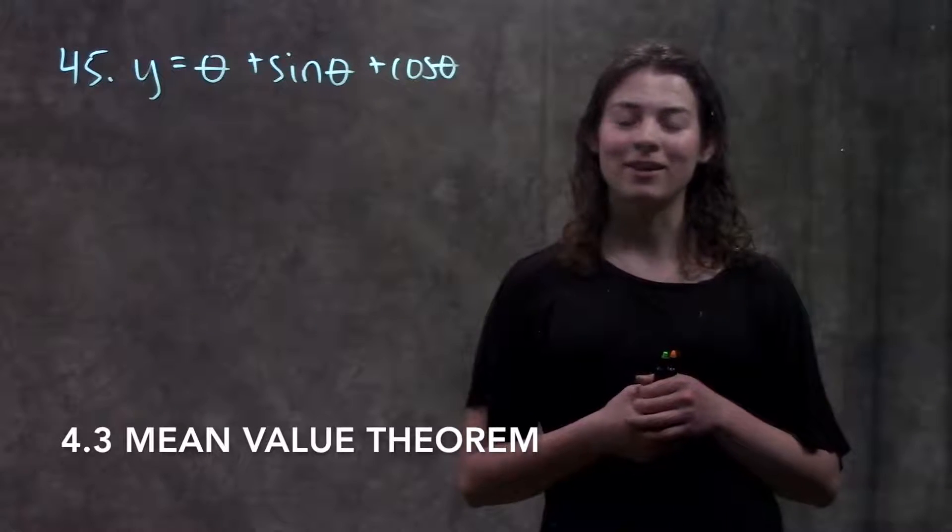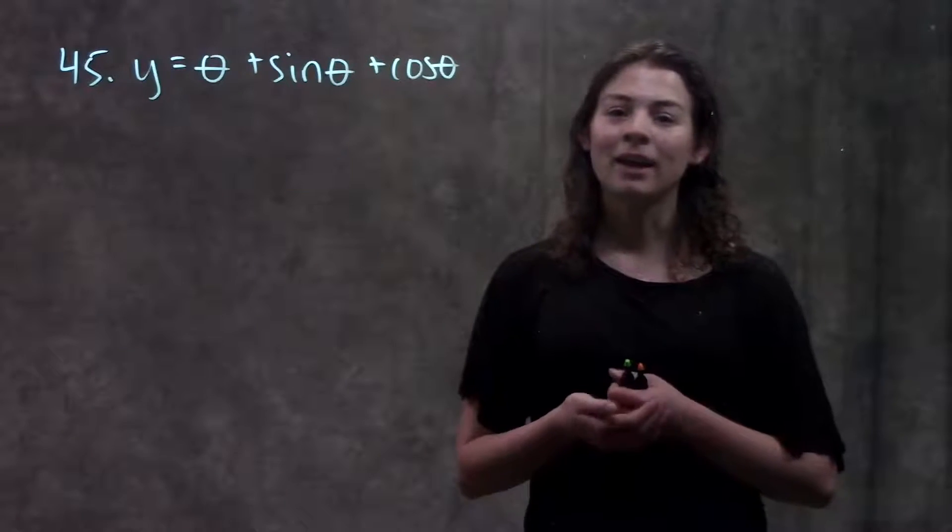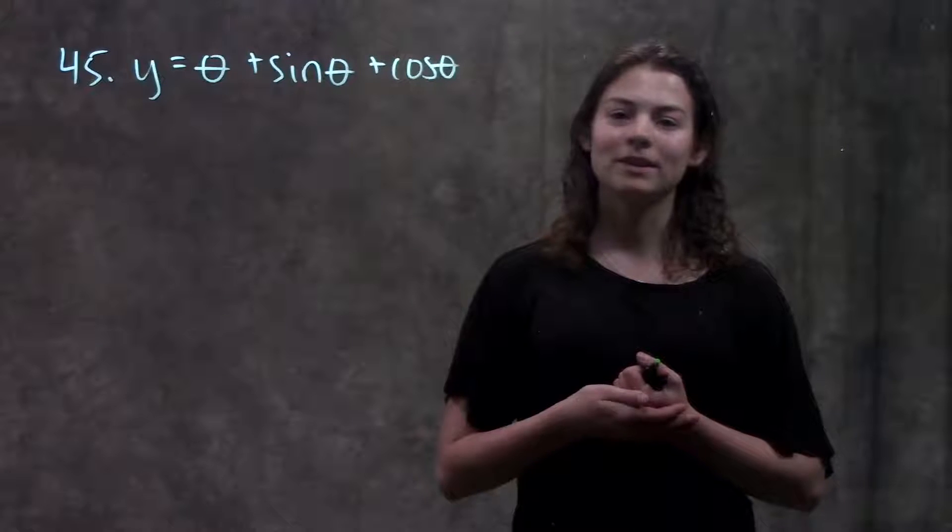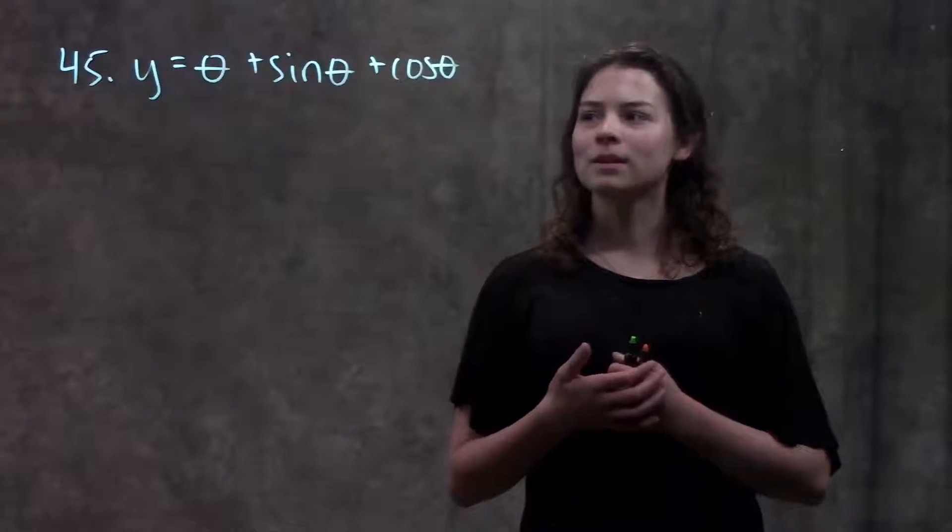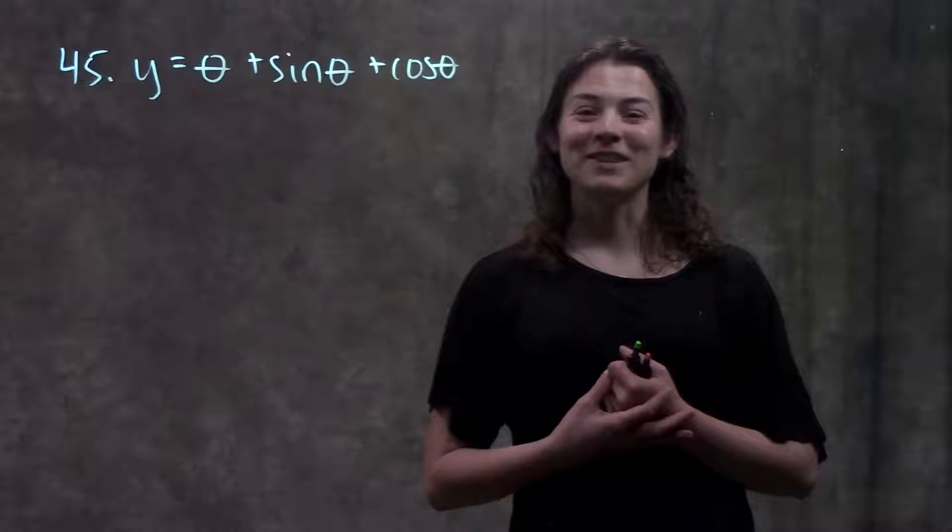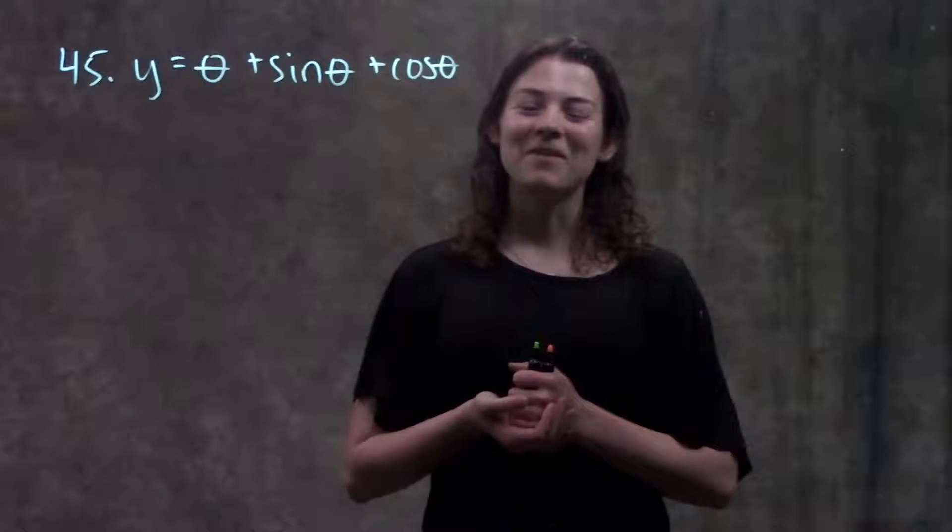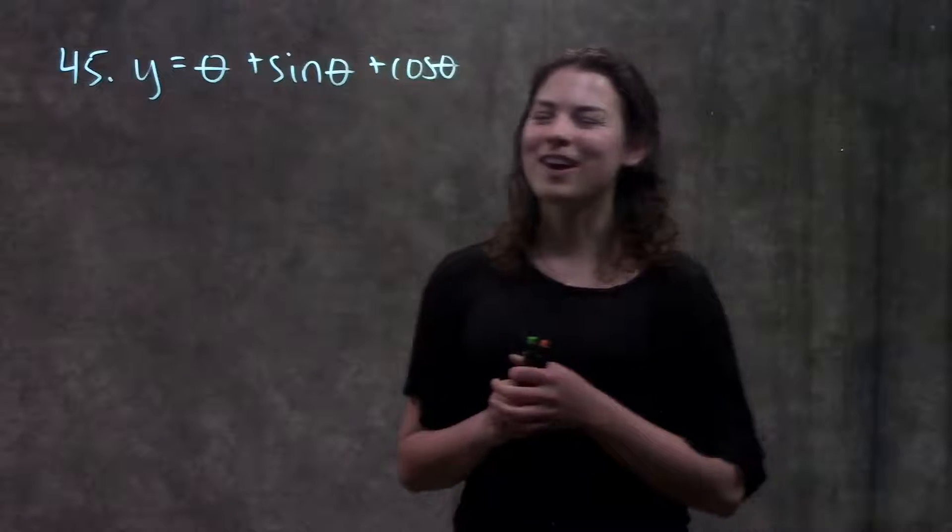This is section 4.3 mean value theorem. In this video we're going to go through example 45 in your book. It gives us this function and it's asking us for the critical points, intervals of increasing and decreasing, and the min and maxes of this function. But what makes this problem especially tricky is that it has trig functions in it, but really the process that we solve this problem is the same as for any other function. So let's go ahead and go through it.